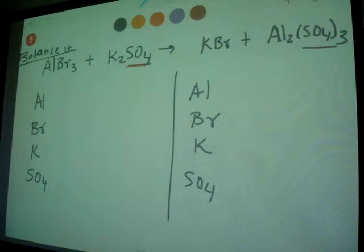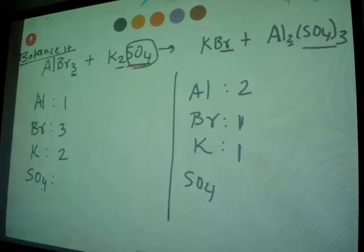So now when you calculate you have aluminum 1, this side aluminum 2, bromine 3, since there is a 3 here and we have bromine 1. We have potassium 2, this side potassium 1, here SO4 just 1, so we take it as 1 and here SO4 is 3.